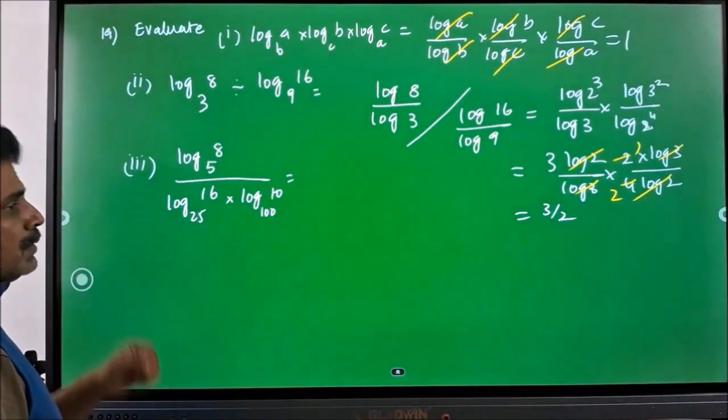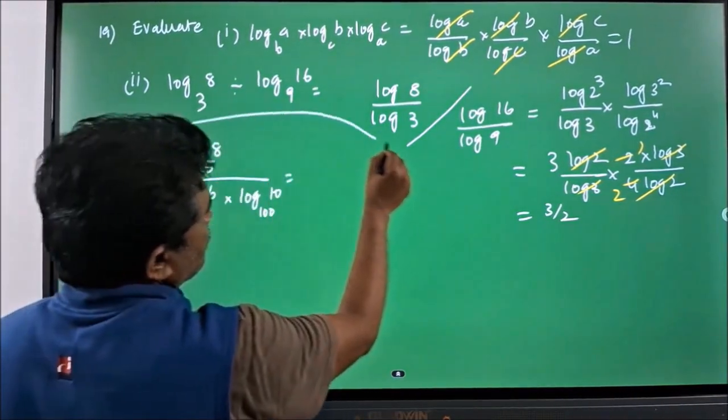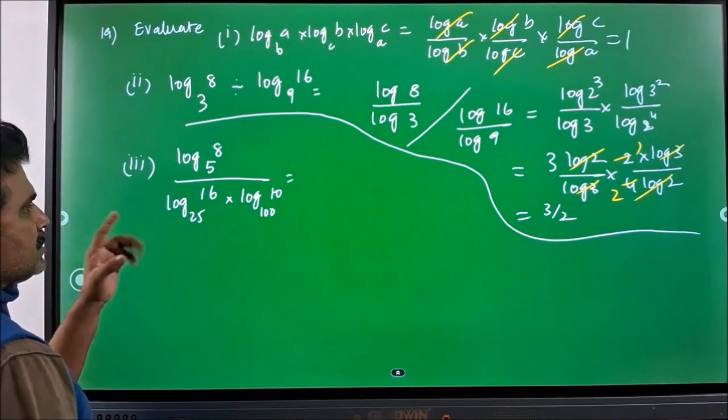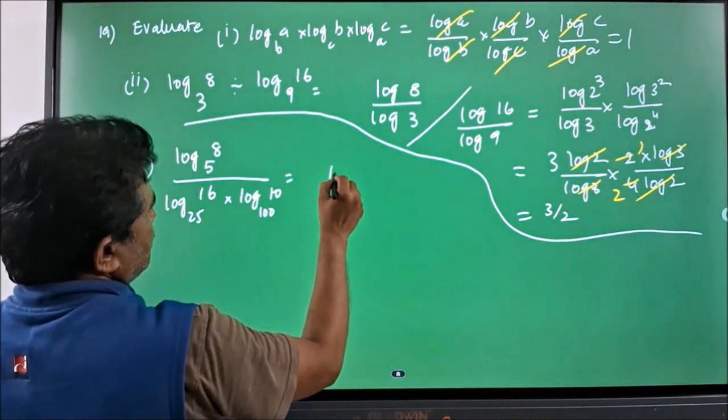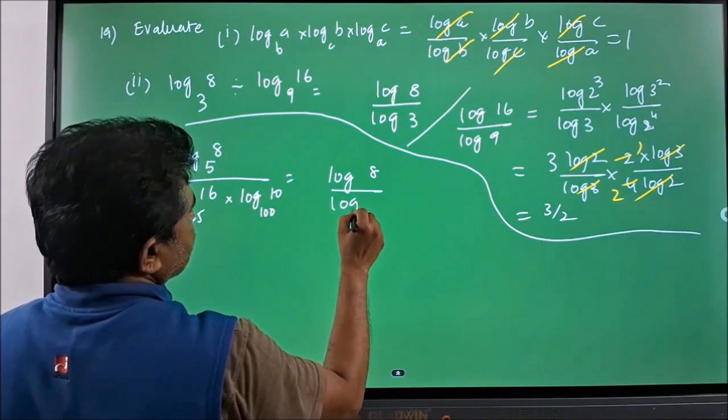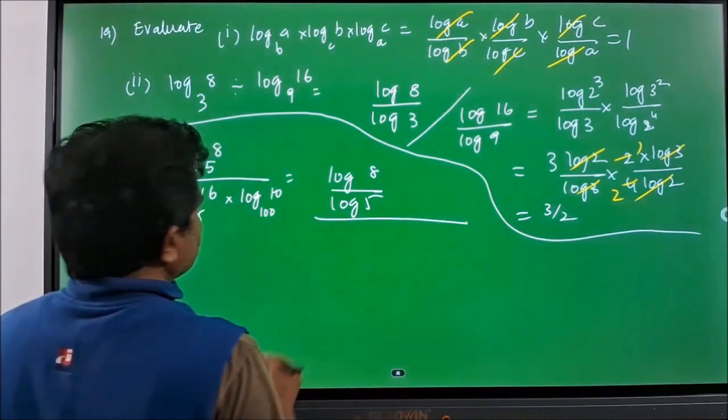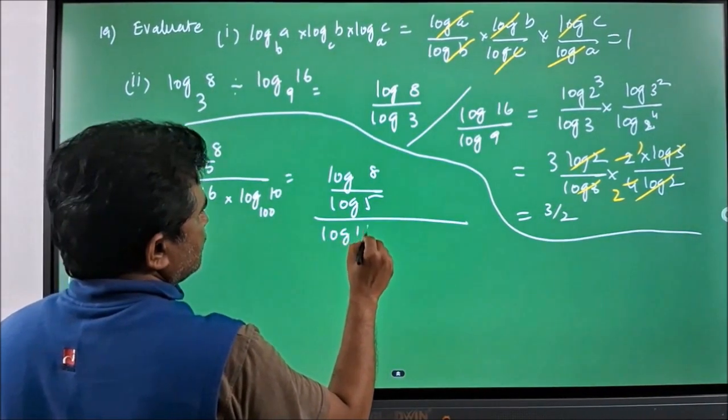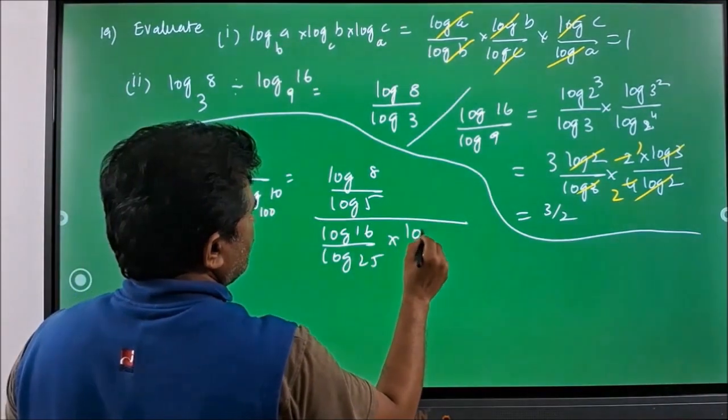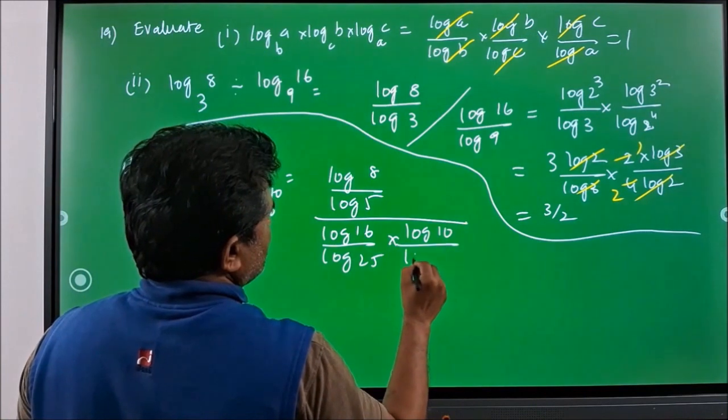Come to the third one. Here also we can do the same like log 8 by log 5 divided by log 16 by log 25 into log 10 by log 100.